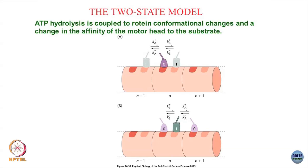It could also switch to the 1 state and take a backward step — backward meaning not in its preferred direction — with rates ka+ and ka−. On the other hand, if the motor is in state 1, the active state, it could hop forward to the n+1 site and become inactive because it has spent the ATP in the process, again with rates ka+ and ka−. It could also switch back to the inactive state on the same site with rates kb+ and kb−.